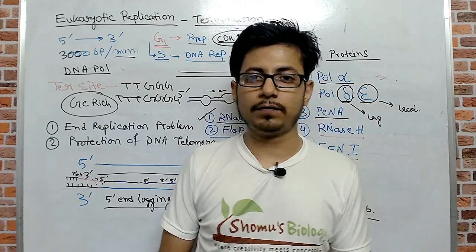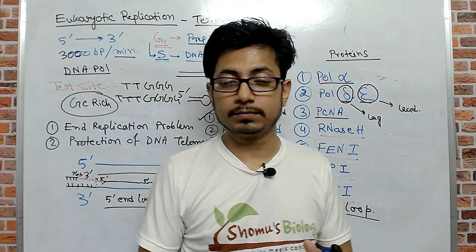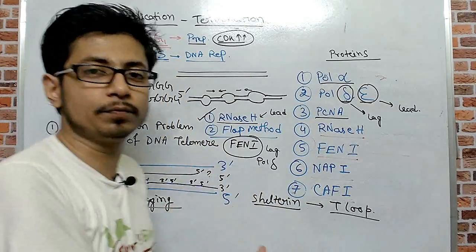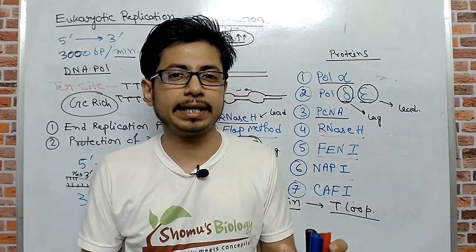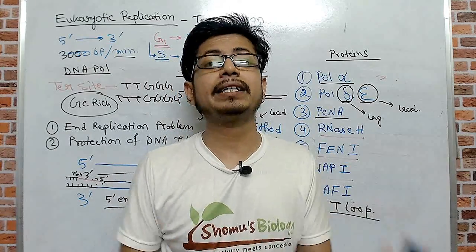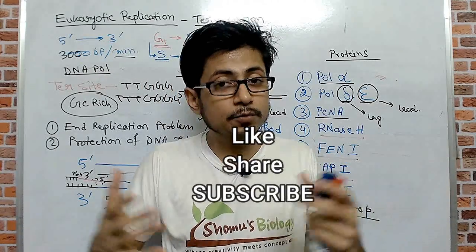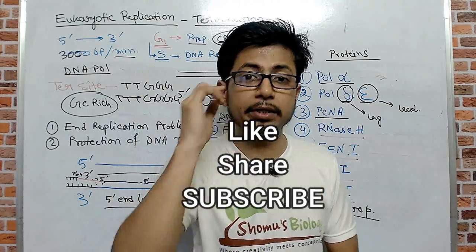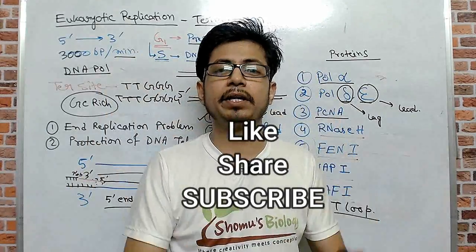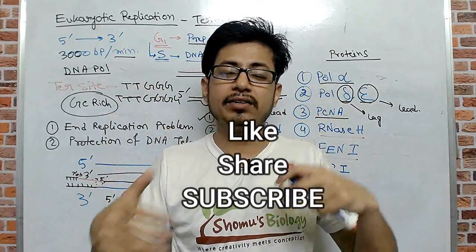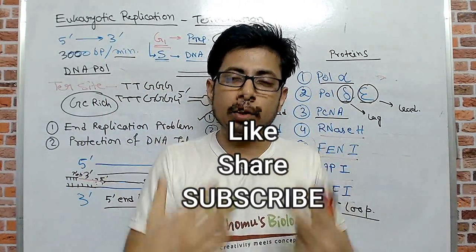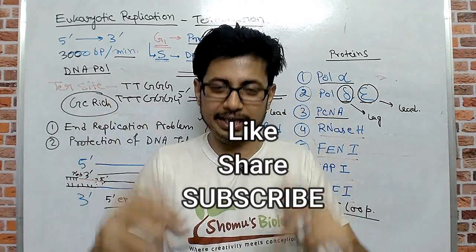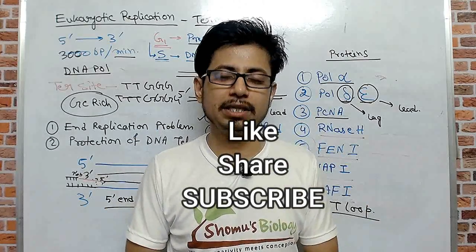Hopefully you understood the end replication problem, the role of the shelterin structure, and the importance of T-loop formation. If you like this video, please hit the like button, share it with your friends, and subscribe to our channel. I recommend watching the complete series on DNA replication, transcription, and translation in eukaryotes on this channel. Thank you, bye.